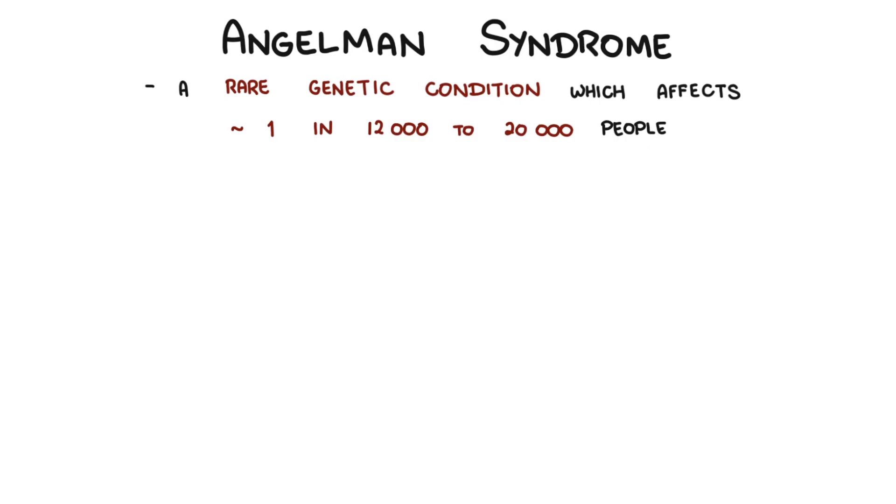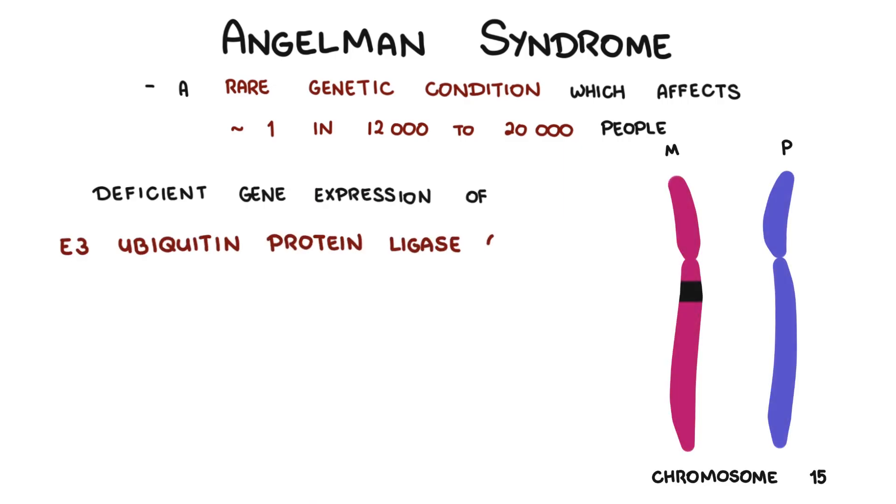Angelman syndrome is caused by deficient gene expression of E3 ubiquitin protein ligase, also known as UBE3A, and was first described in 1965 by Dr. Harry Angelman.